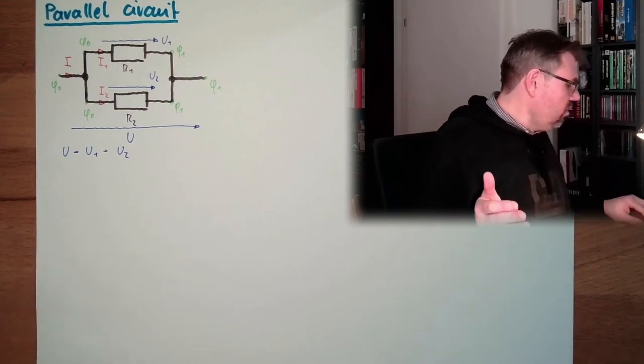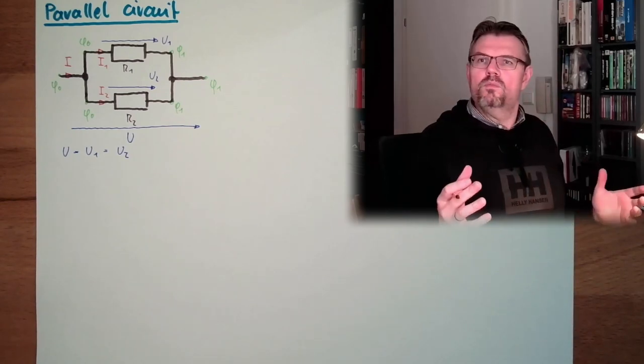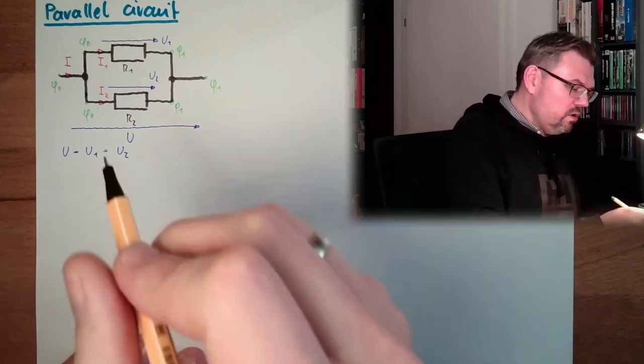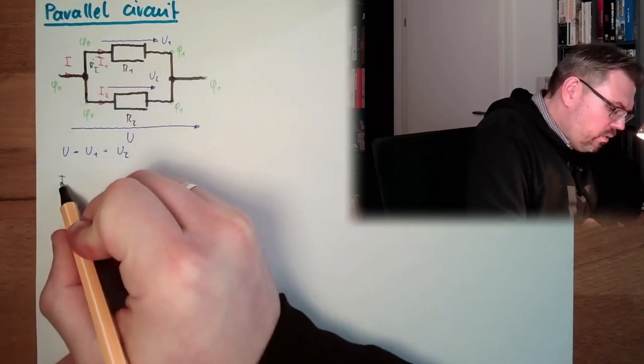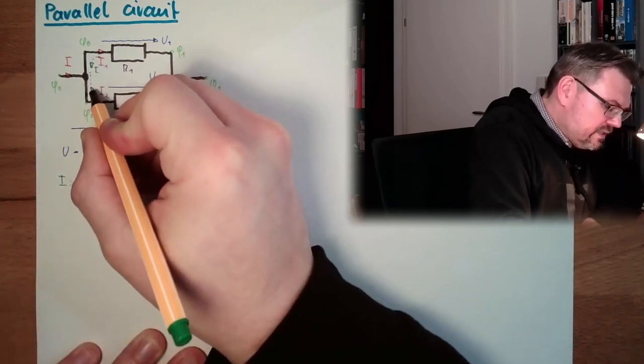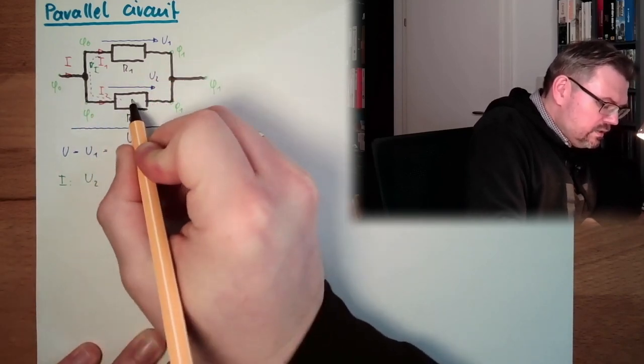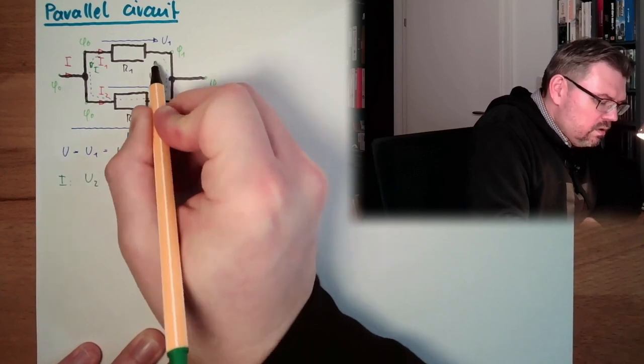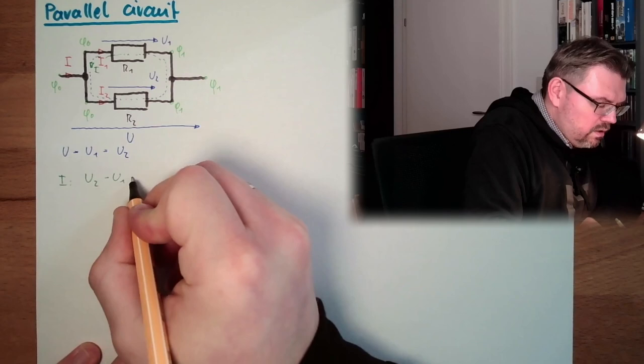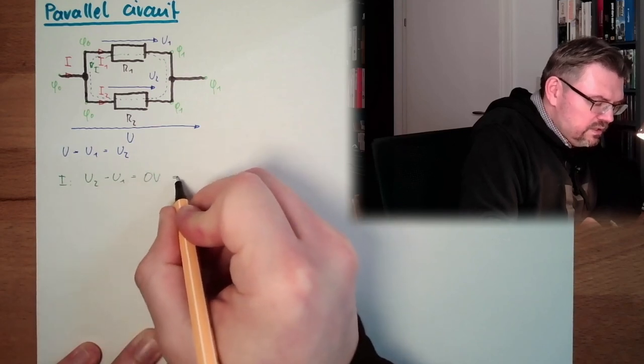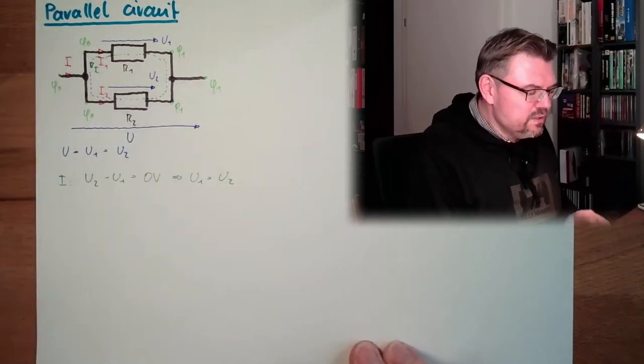Of course, we could also use Kirchhoff's law. We could also use this and say, we have a loop, second Kirchhoff's law. We have a loop starting here, loop number one. And let's see, start here. First one is U2, second one is minus U1 is zero volts. This means U1 equals U2. And also, of course, U is the same.